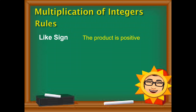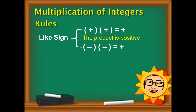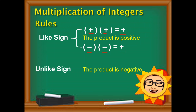Ibig sabihin, pag nag-multiply tayo na magkaparehas ng sign, that's positive. Positive times positive — that's positive. Same with this one: negative times negative — that's positive. Basta pag magkamuka, it's positive. The other way around — kapag unlike sign, opposite that, ibig sabihin magkaiba. And the answer is opposite. Kung positive sa like, dito naman negative yung magiging sagot.